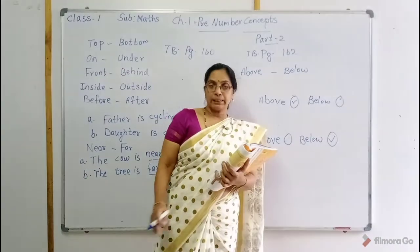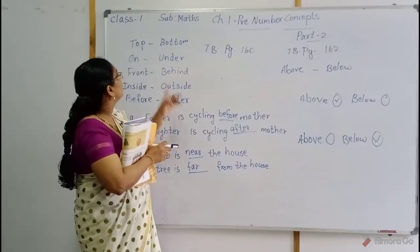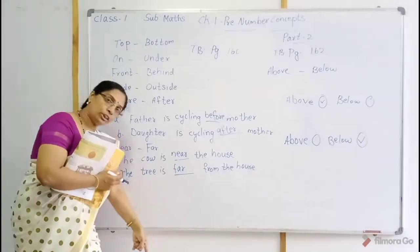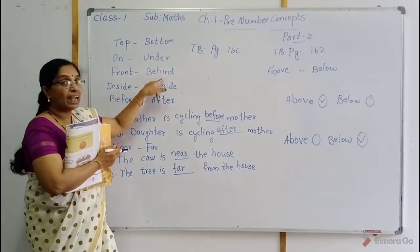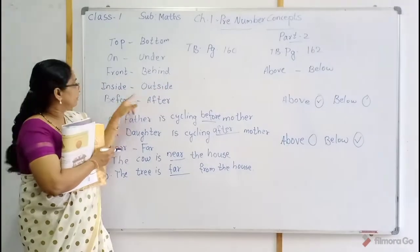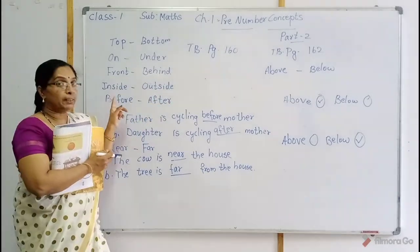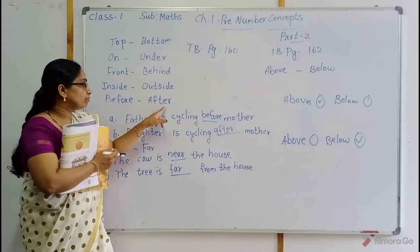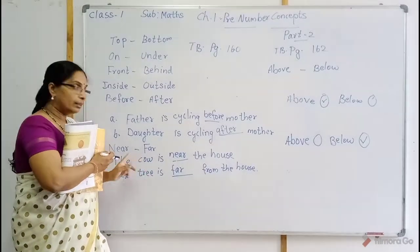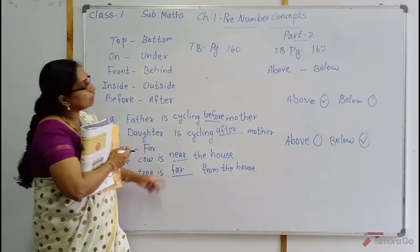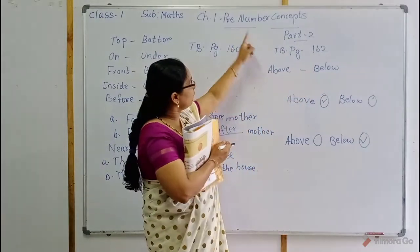Now, these are the position places. Once again we will repeat all: top, bottom; on, under; front, behind; inside, outside — we explained with examples. Before, after. Near, far. Above, below. These are the pre-number concepts.